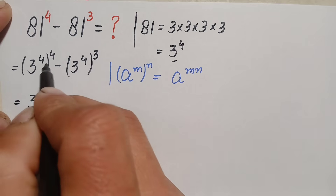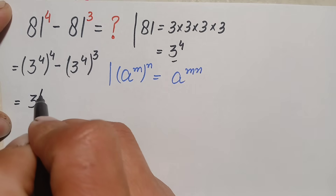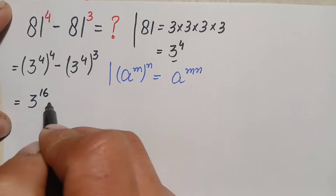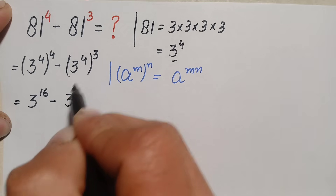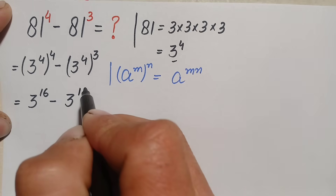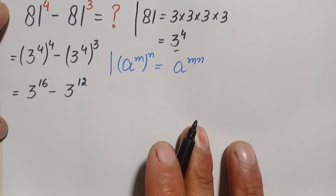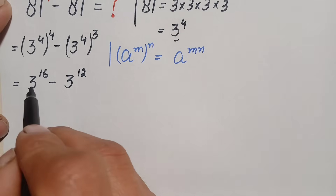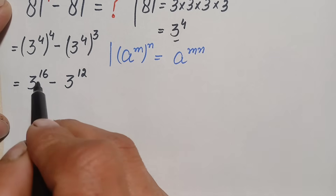So this will become: 3 to the power — let's multiply the powers — 4 times 4 is 16, minus 3 to the power 4 times 3.5, which is 12. Now we will try to make these two numbers the same, so we will do some changes in the first term.